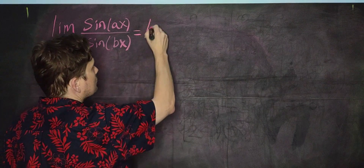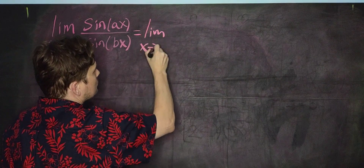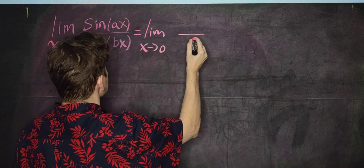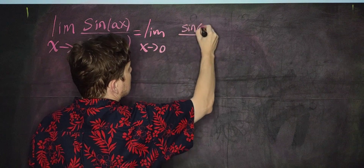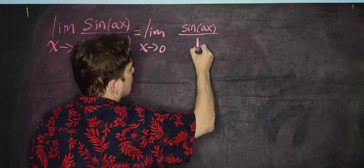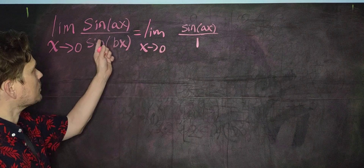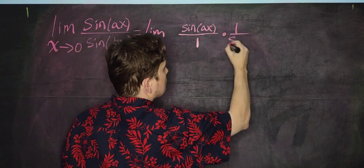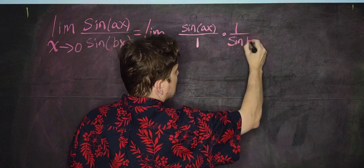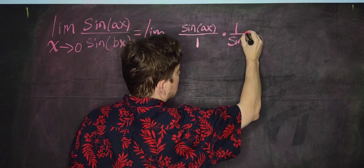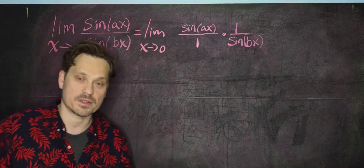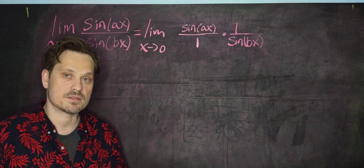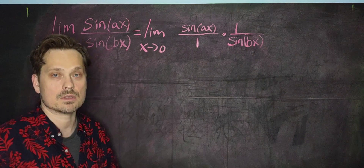Here's the model. I'm going to write the limit as x approaches 0, and then rewrite this as sine ax over 1, and separate out the sine bx — multiplying by 1 over sine bx like this. This is a perfectly allowed move; I'm just rewriting and simplifying the fraction. Each fraction can then be multiplied by an appropriate form of the number 1.